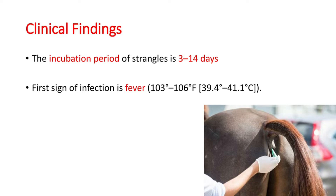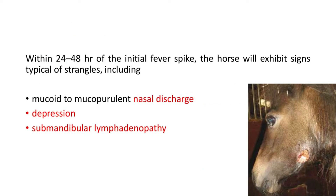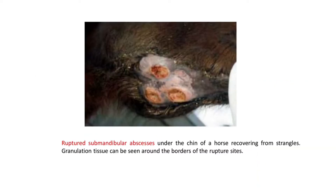The first sign of infection is fever of 103 to 106 degrees Fahrenheit. Within 24 to 48 hours of the initial fever spike, the horse will exhibit signs typical of strangles, including mucosal to mucopurulent nasal discharge, depression, and submandibular lymphadenopathy. Here you can see a picture of a ruptured submandibular abscess under the chin of a horse recovering from strangles; granulation tissue can be seen around the borders of the ruptured sites.